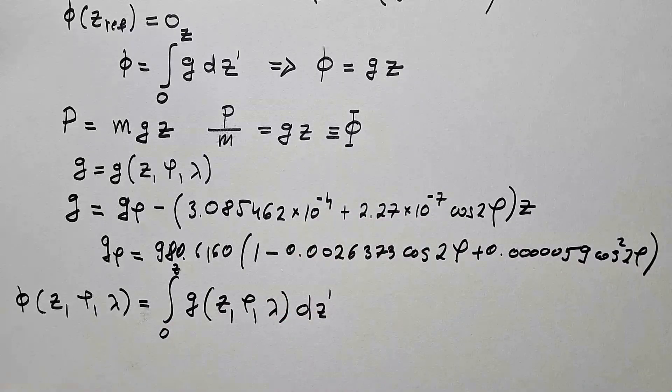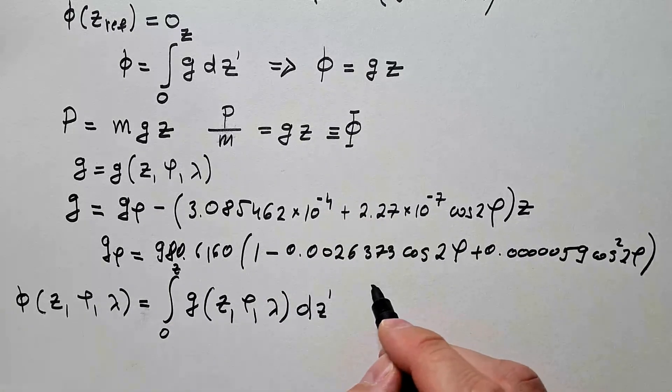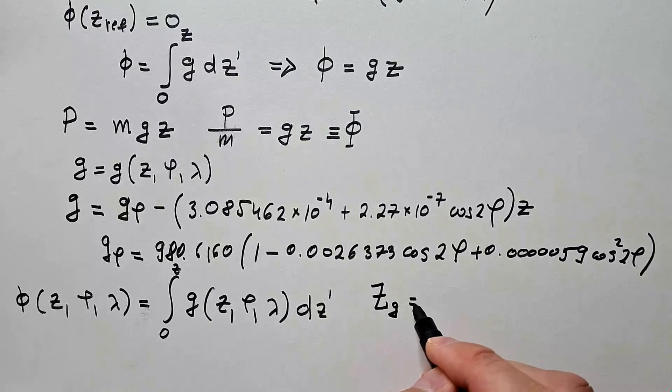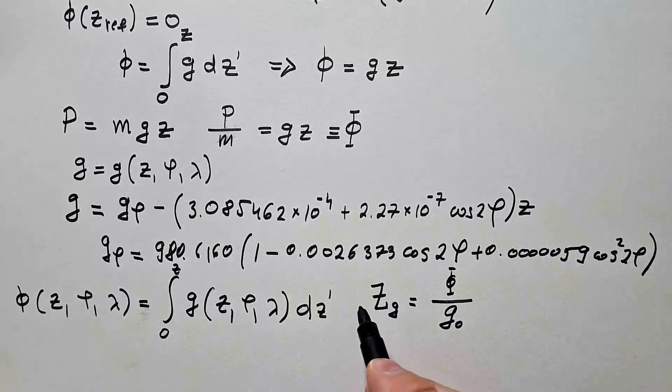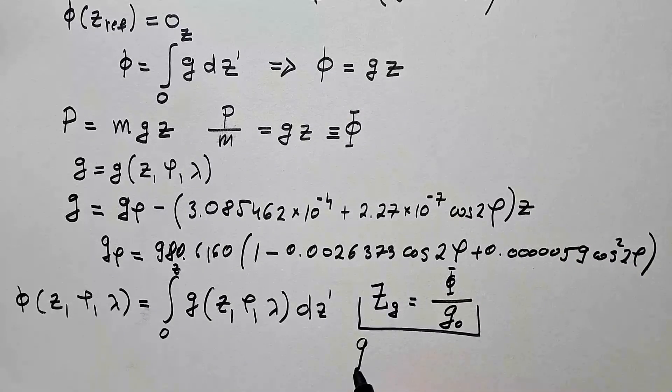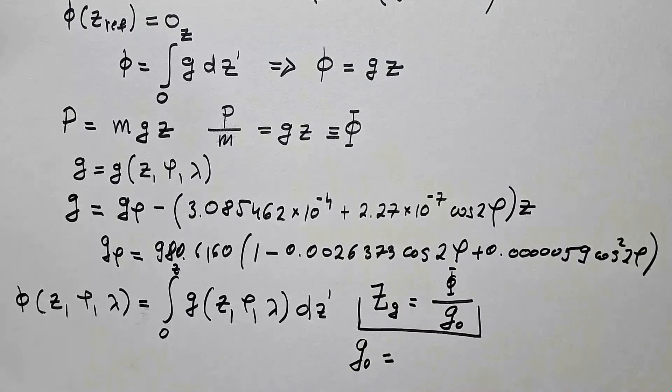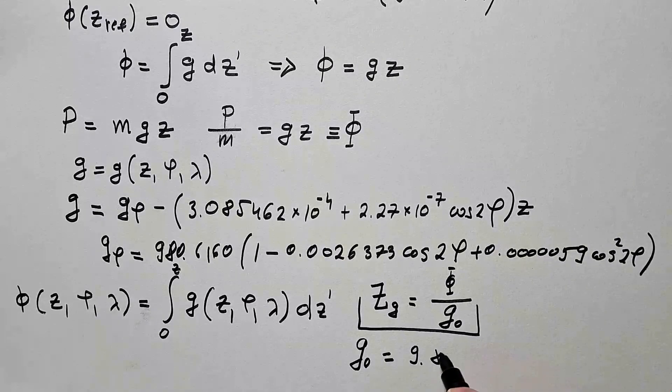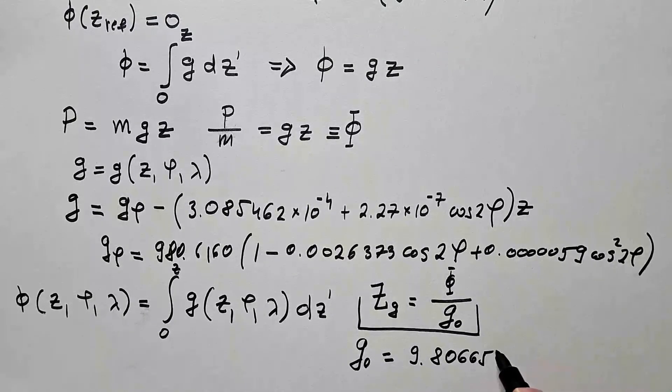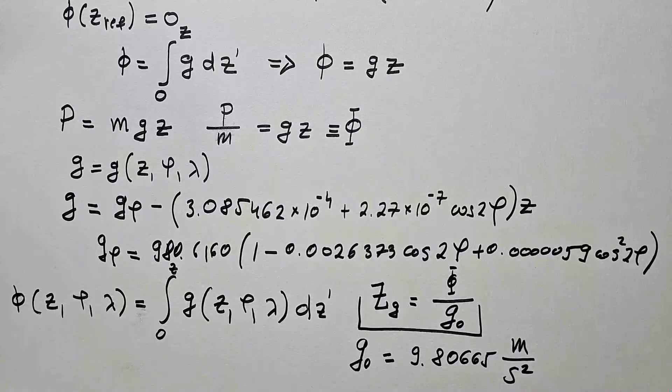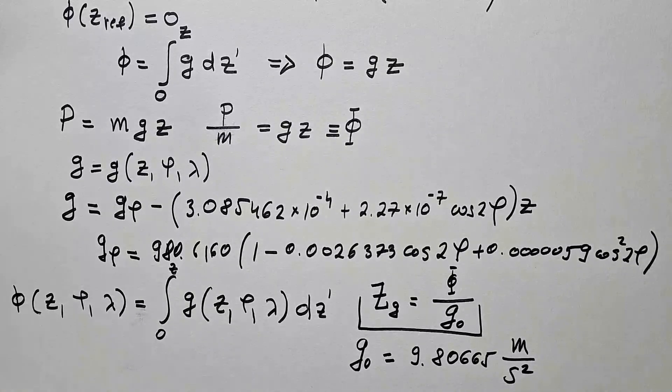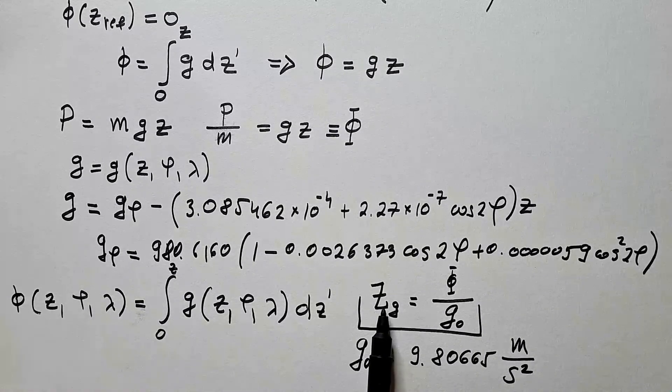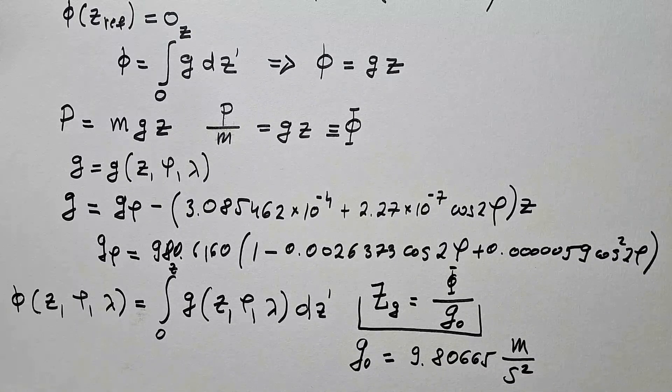Now using this definition of geopotential, we can also define geopotential height z_g as phi divided by g naught, where g naught is the standard gravity at the reference height which is mean sea level and it has value 9.80665 meters per second square. It was established in 1901, the same year when we define one liter to be one kilogram of water.